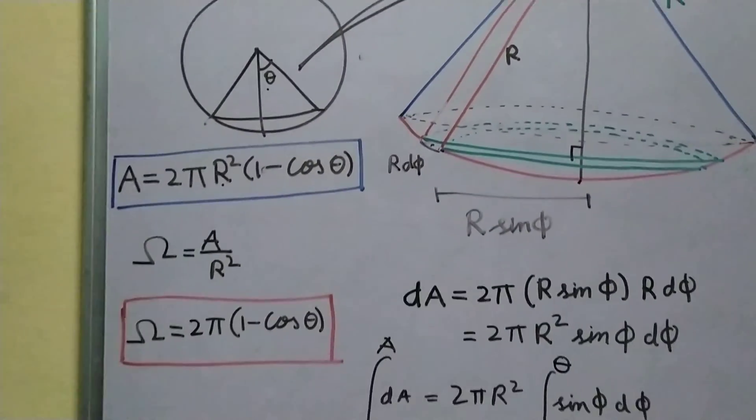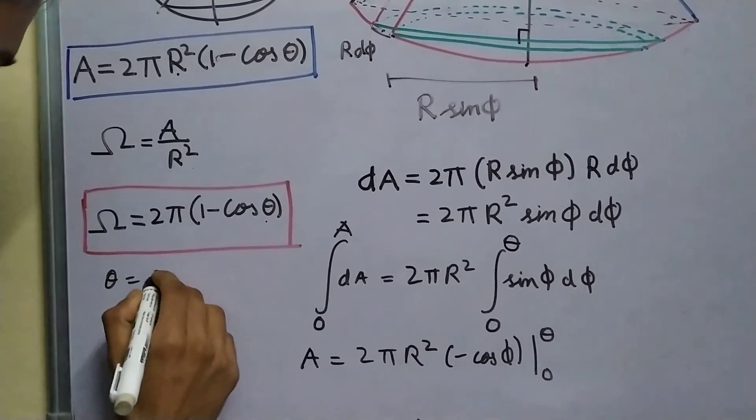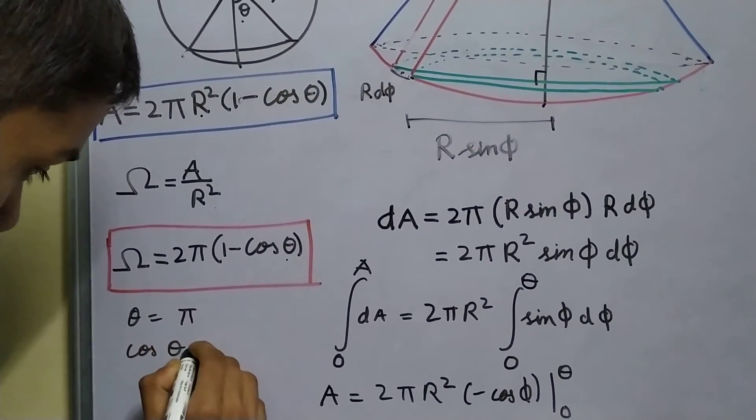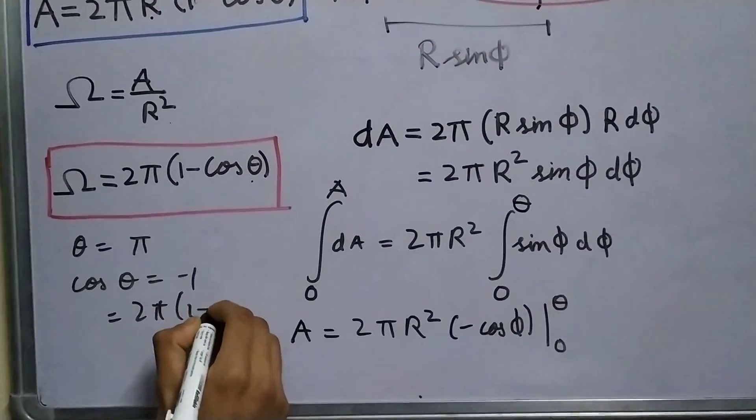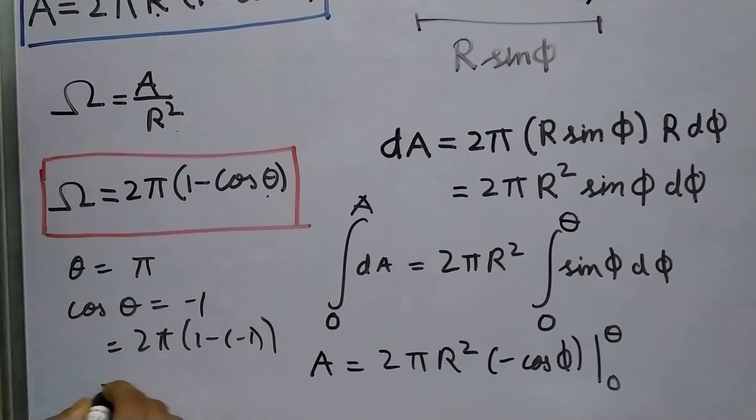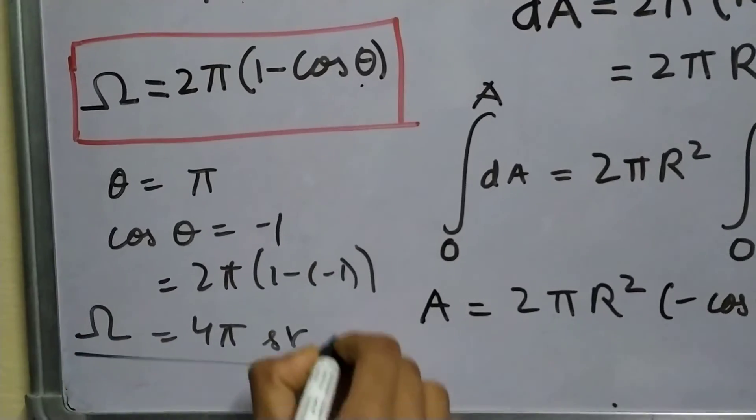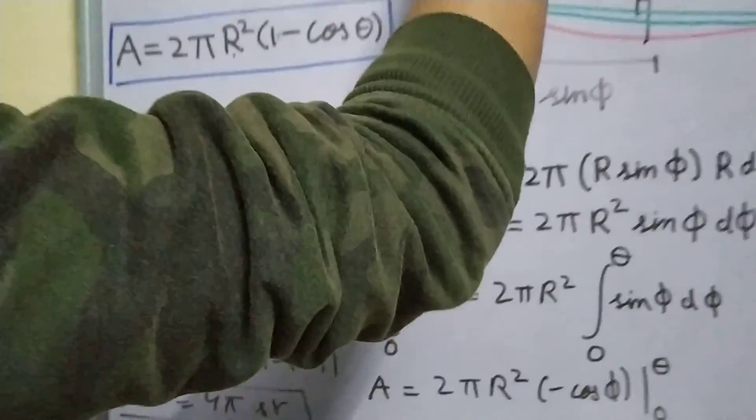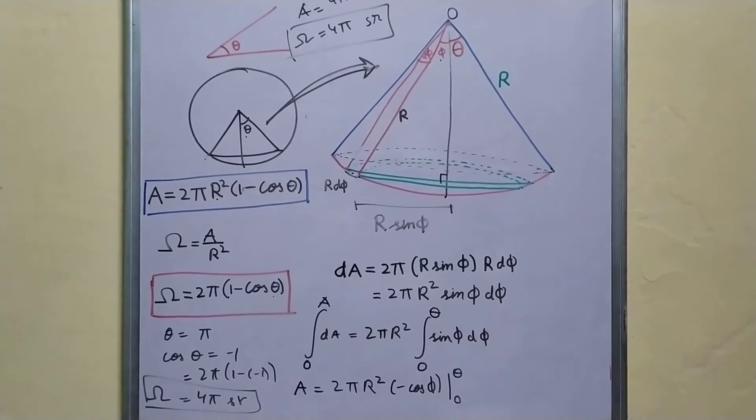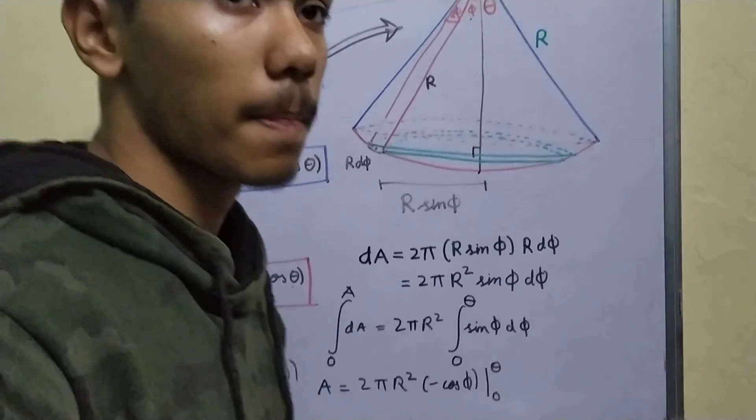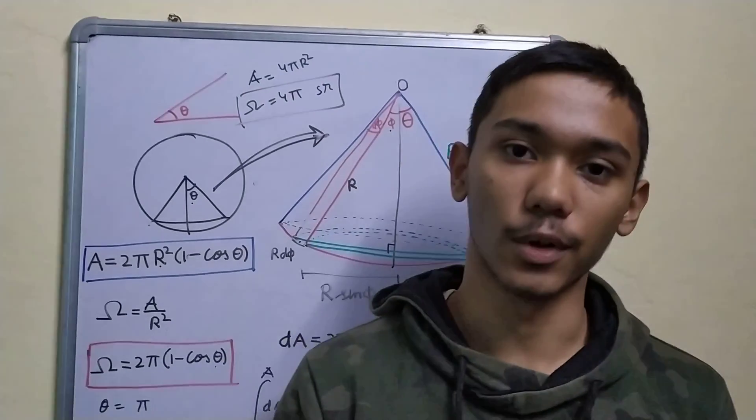Now, let's do it using this equation. If theta equal to pi, cos theta will be minus 1. So, you are left with 2 pi times minus 1 minus 1 which is 4 pi steridian. You can see these two methods give us the same answer. I hope all of you learned something new today and as always, thanks for watching. Stay tuned.